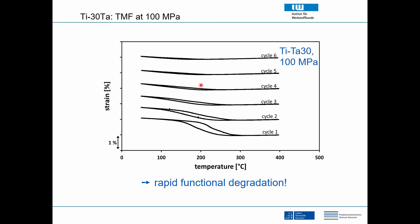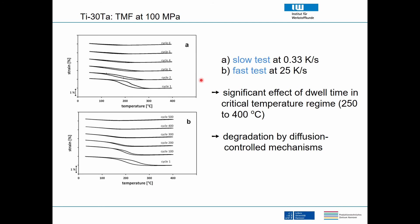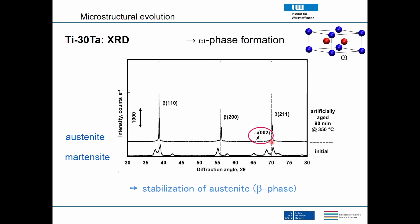This is the same data again. The slow test had a temperature change rate of 0.33 K/s. The same experiment run fast at 25 K/s shows similar-looking loops, but now it takes up to 200 cycles before the material degrades. We have a significant effect of time — especially of the dwell time in the high-temperature regime — indicating a degradation process controlled by diffusion mechanisms.